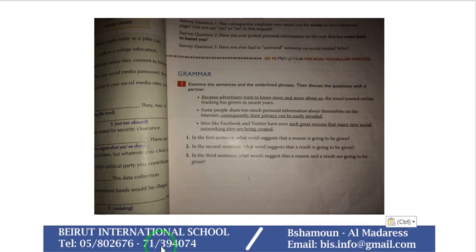You're given three sentences. Let's read them together. 'Because advertisers want to know more and more about us, the trend toward online tracking has grown in recent years.' What is this type of sentence? It's complex because it uses the cause-effect connector 'because,' as indicated right before you.